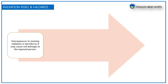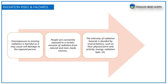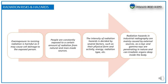Overexposure to ionizing radiation is harmful as it may cause cell damage to the exposed persons. People are constantly exposed to certain amounts of radiation from natural and man-made sources. The intensity of the radiation hazard is decided by several factors such as activity, physical form, energy, and radiation type. The radiation hazards in industrial radiography are mainly caused by external sources such as x-rays and gamma rays, which can irradiate organs deep inside the body. Therefore, radiation hazard evaluation is necessary in order to avoid alarming levels of exposure.